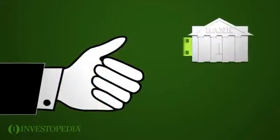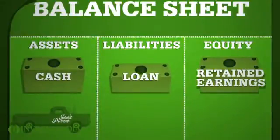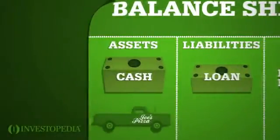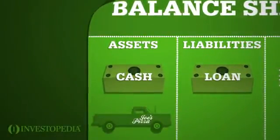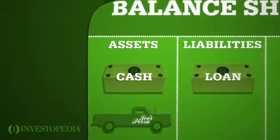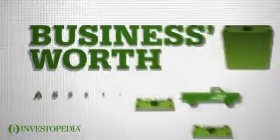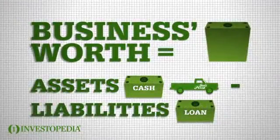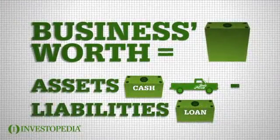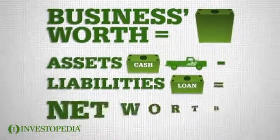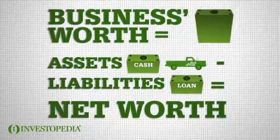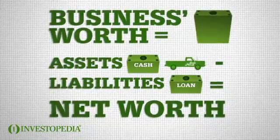Every month, Joe makes a payment against his loan. He reduces his liabilities by the amount of the payment, and his cash is reduced by the same amount. To find out his business's worth, Joe subtracts liabilities from his assets. This equals the net worth of his business.